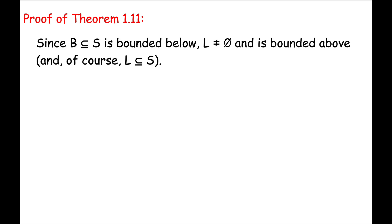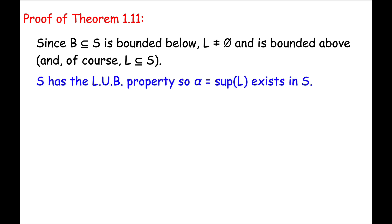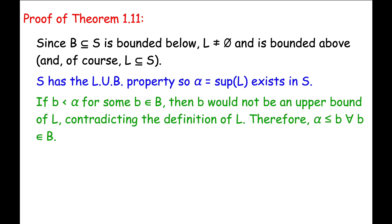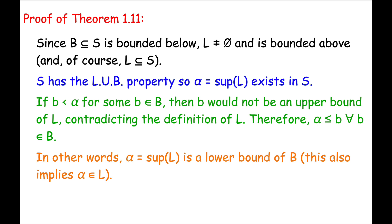Now let's work through a polished proof of Theorem 1.11. The set B is assumed to be bounded below. Therefore, it has at least one lower bound, and the set L of all lower bounds of B is not empty. That set L must also be bounded above — in fact, by any element of B. The ordered set S is assumed to have the least upper bound property in the hypotheses of our theorem. Therefore, the supremum of L exists in S. Call it alpha. If we were given any element little b in capital B that was less than alpha, by definition, b would not be an upper bound of L because alpha is the least upper bound of L. Therefore, alpha must be less than or equal to any element little b in capital B — in other words, alpha must be a lower bound of B, which also happens to imply that alpha is an element of L.